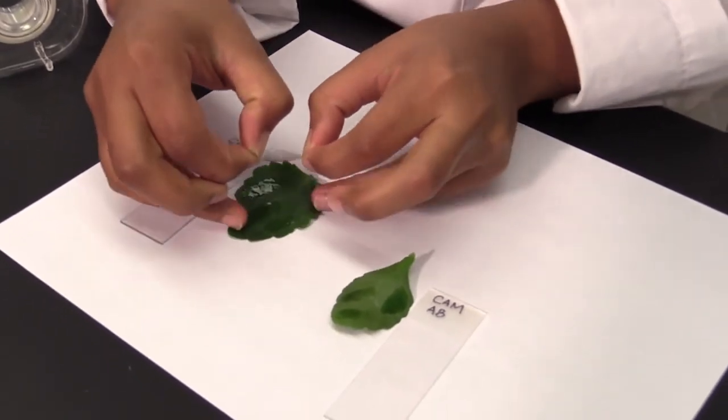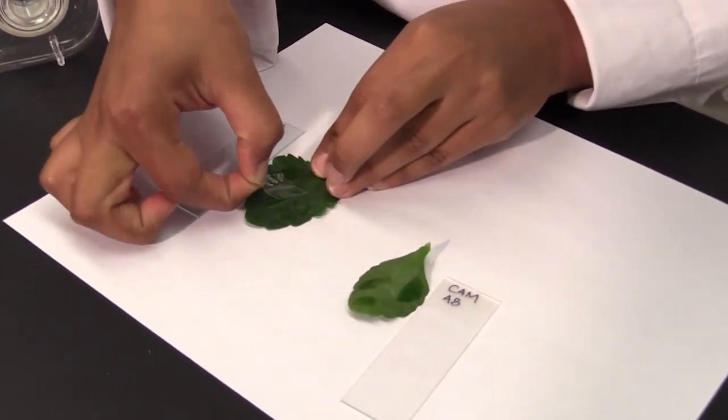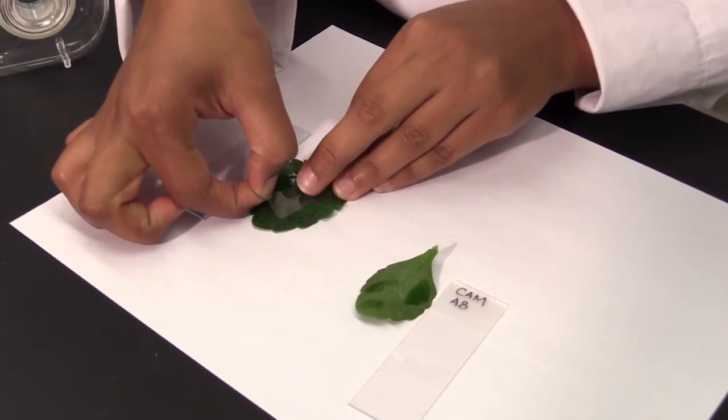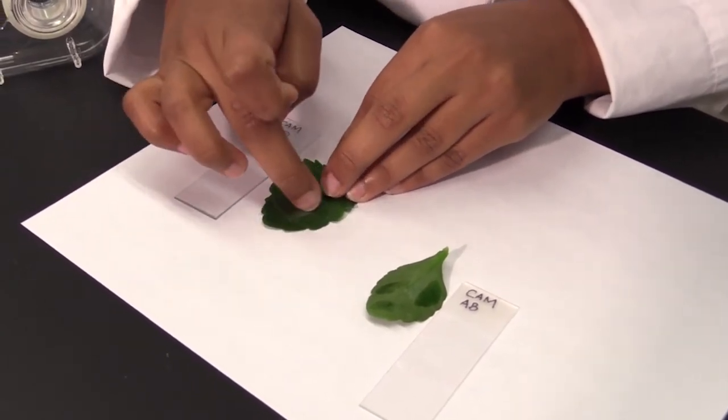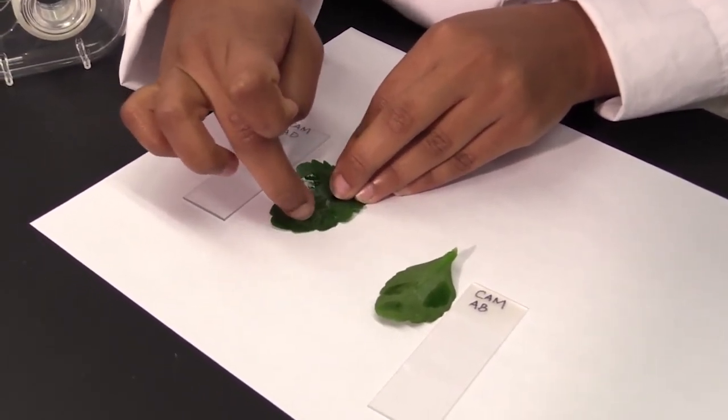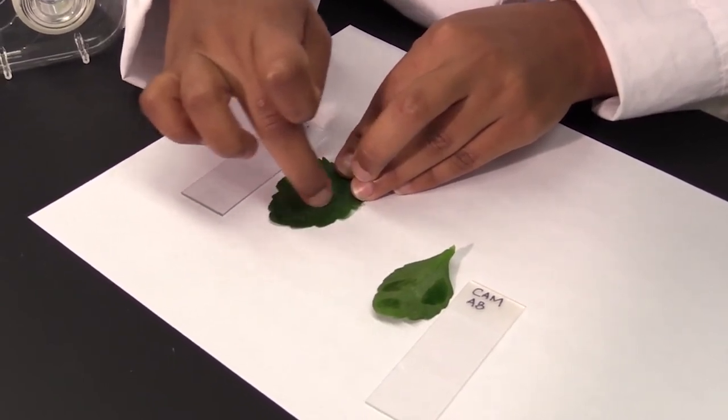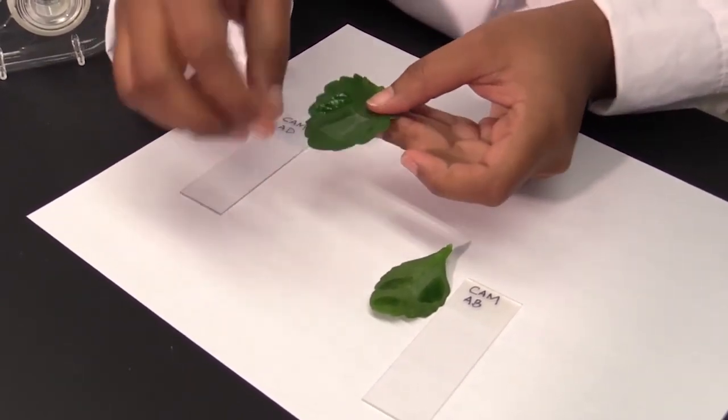Once you've cut the tape, place it on the dried nail polish patch. Press down on the tape to ensure good contact with the nail polish, and then pull on the corner of the tape to remove the nail polish impression.